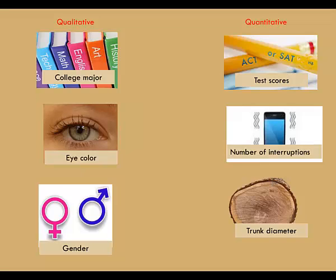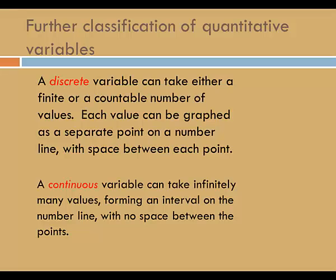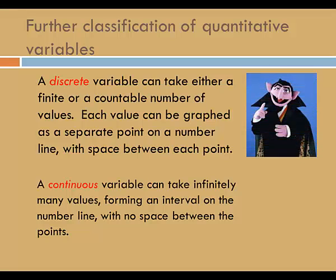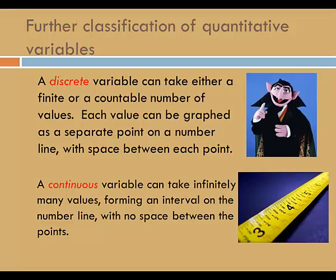So: college major, eye color, and gender are qualitative, while test score, number of interruptions, and trunk diameter are quantitative. Quantitative variables can further be classified as discrete or continuous. A discrete variable can take either a finite or countable number of values — each value can be graphed as a separate point on a number line with space between each point. A continuous variable can take infinitely many values, forming an interval on a number line with no space between the points. If you can count to get the value of a quantitative variable, then it is discrete. If you must measure to get the value, then it is continuous.